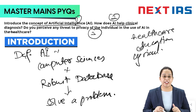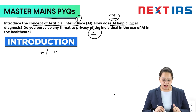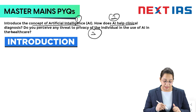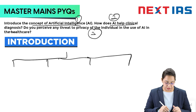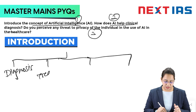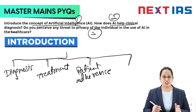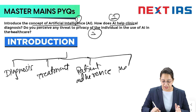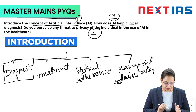The next part of the question is how AI helps in clinical diagnosis. If you see AI in healthcare, there are four broad areas: first is clinical diagnosis, second is treatment options available, third is patient adherence or patient tracking, and the fourth is managerial or administrative functions. The question specifically asks about clinical diagnosis.